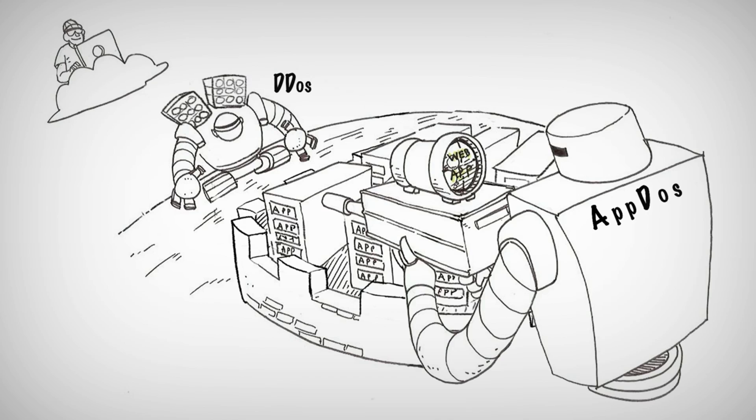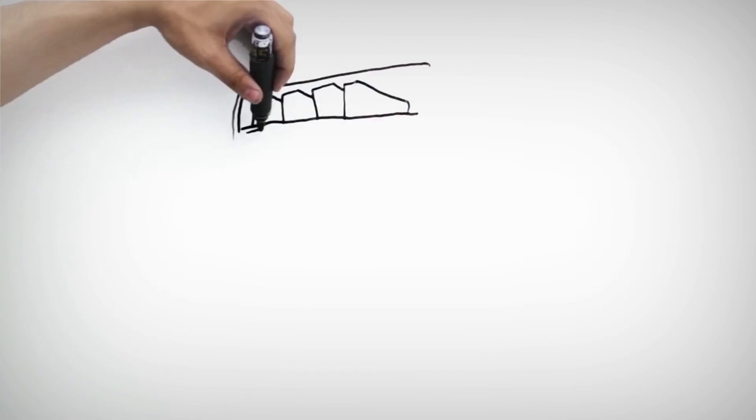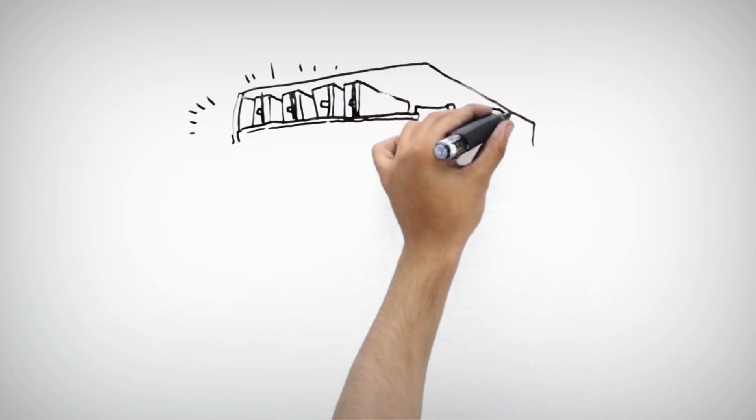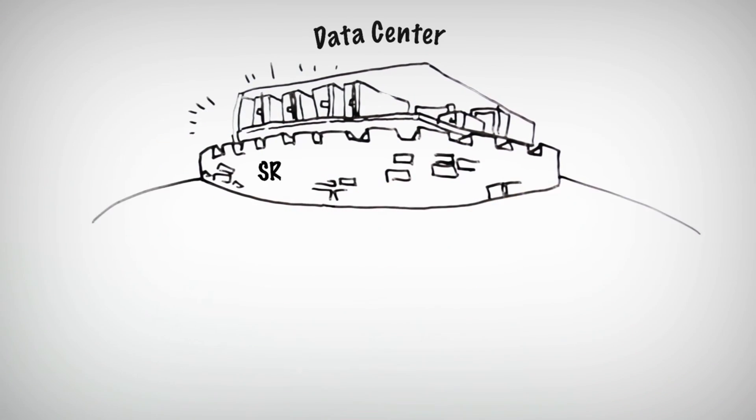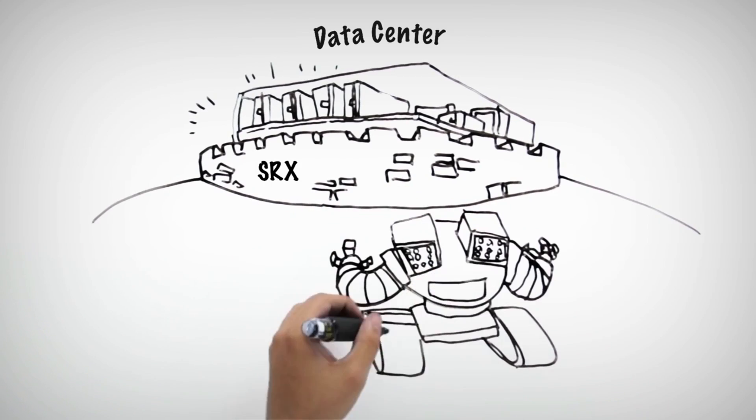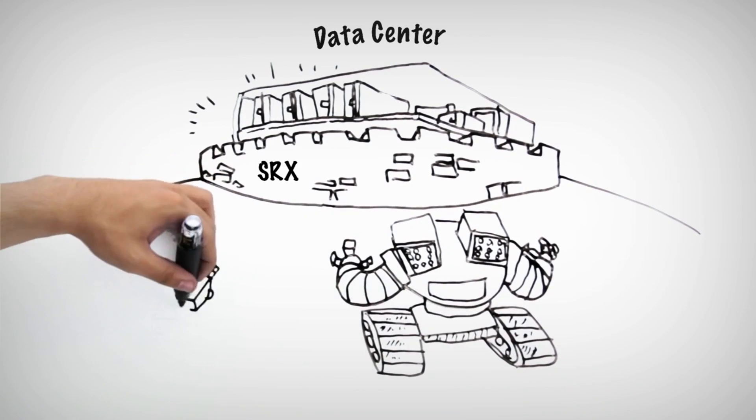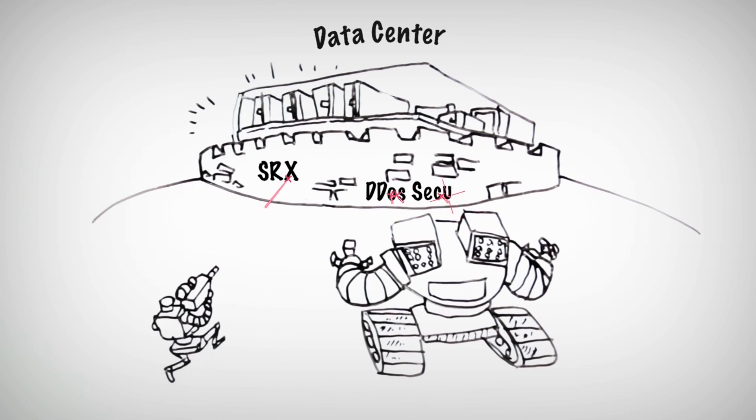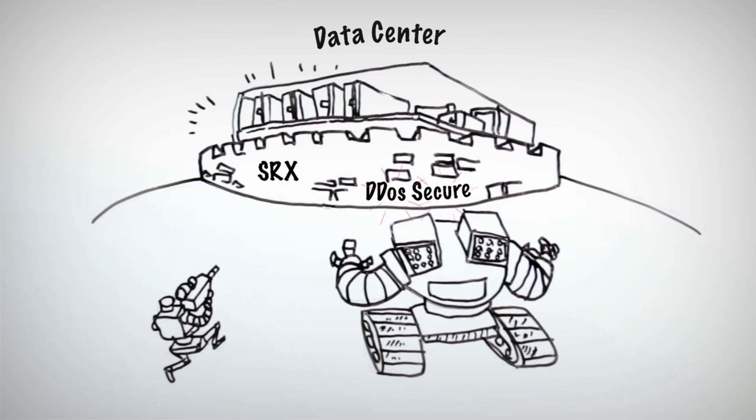Juniper's DDoS Secure is the perfect solution. It's an advanced DDoS and APDOS protection service that uses a behavioral approach to detecting and deflecting unwanted traffic before it becomes a problem. Like Web App Secure, data from DDoS Secure will integrate with Juniper's SRX Firewall.